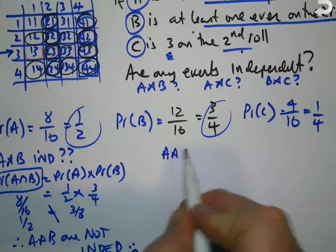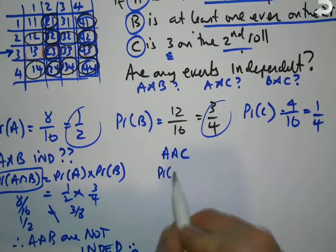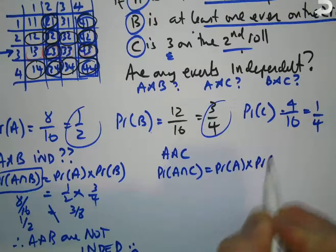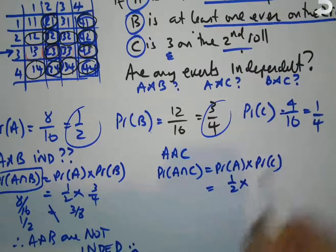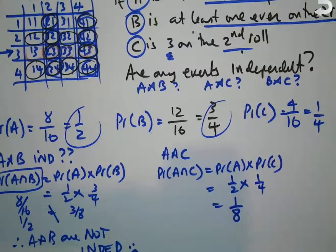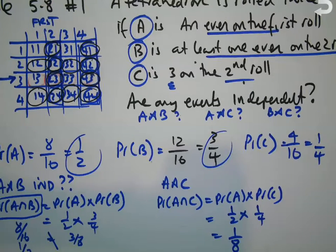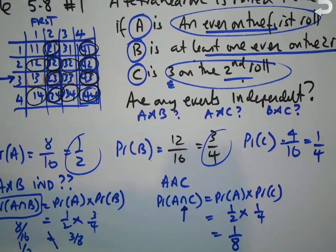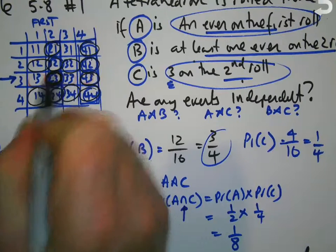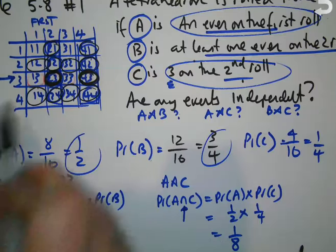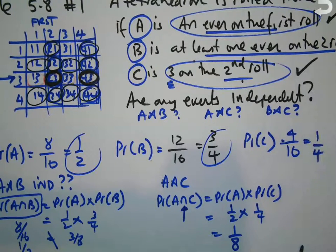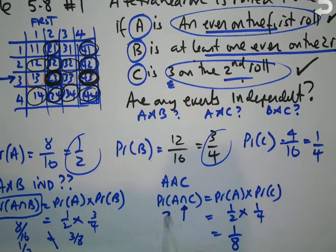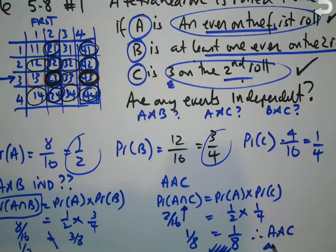What about A and C? They'll be independent if the probability of A intersect C equals the probability of A times the probability of C. The probability of A is one half, the probability of C is one quarter, so the product is one eighth. For A intersect C, I need an even on the first roll AND a three on the second roll. That only occurs at (2,3) and (4,3) — just two outcomes. Two out of 16 equals one eighth. That matches, so A and C are independent.